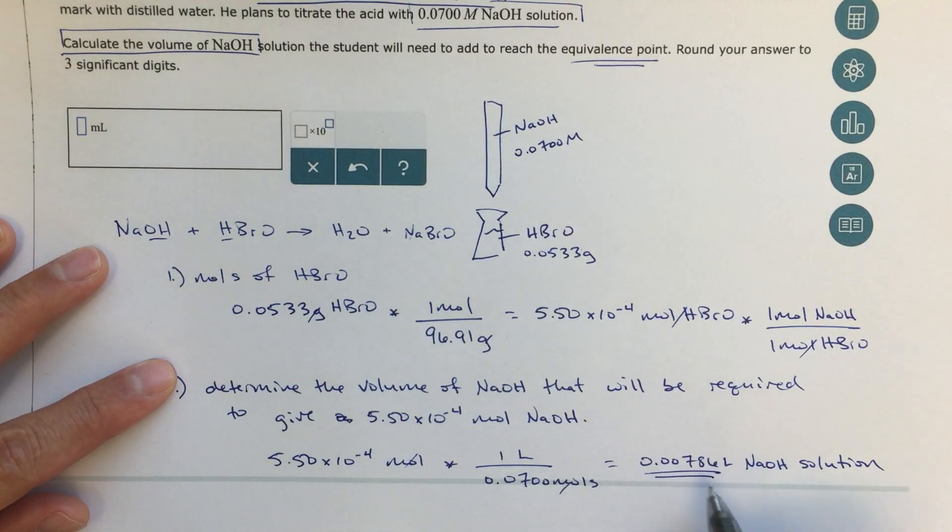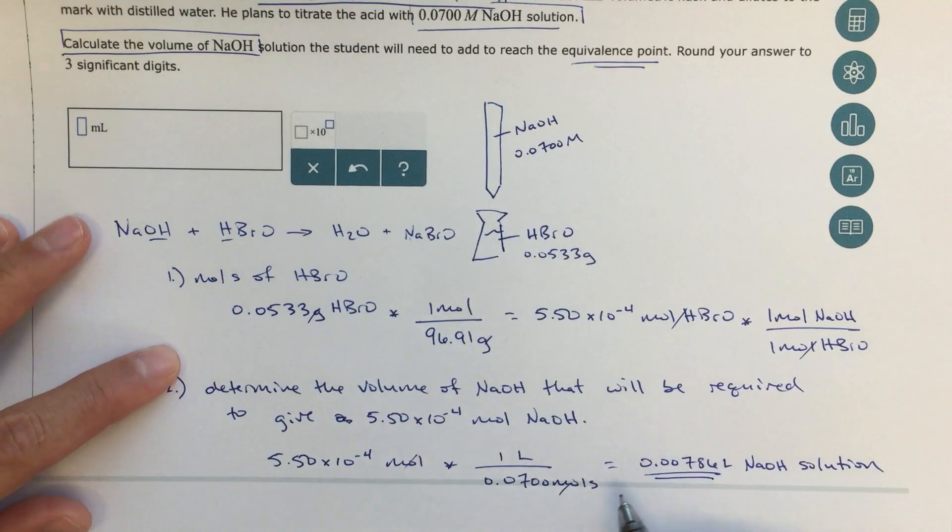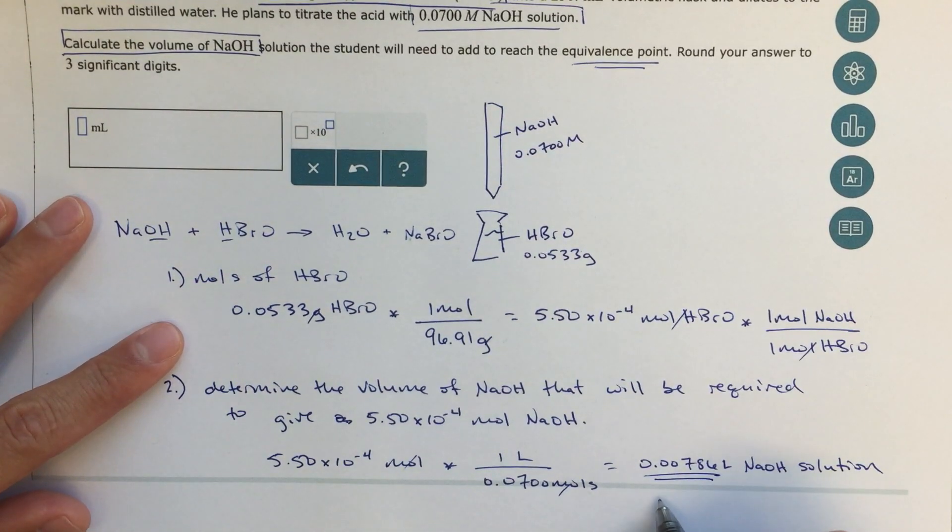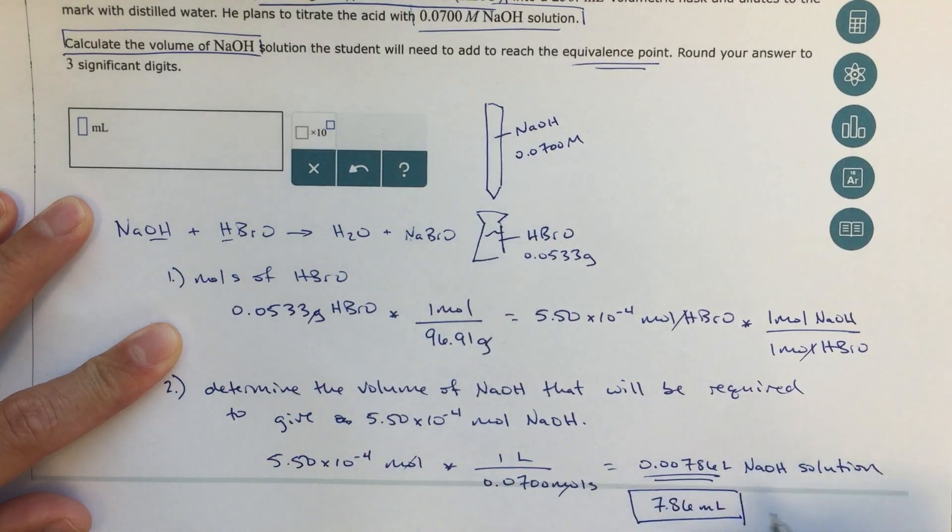So this 0.00786, that's in liters, I want to convert to milliliters. So that would be 7.86 milliliters. That is my final answer for this problem.